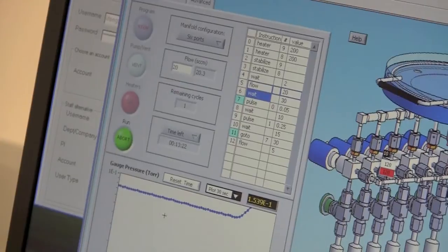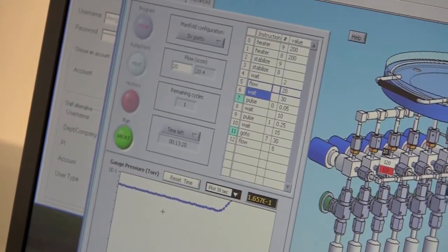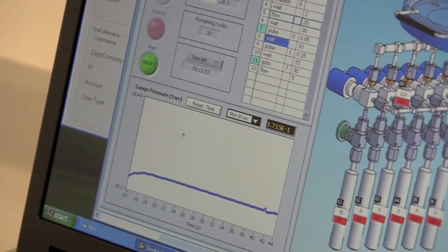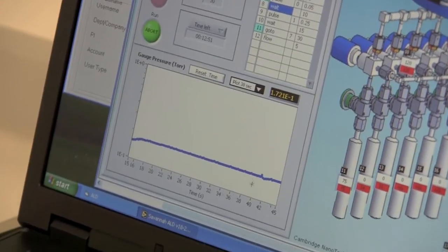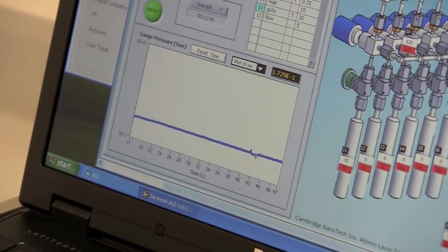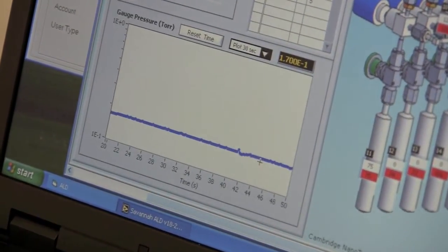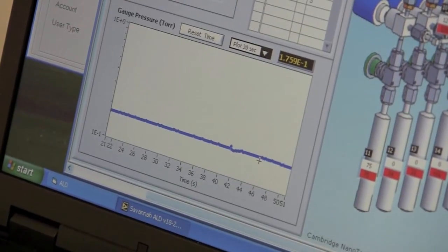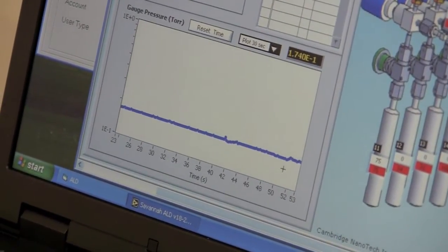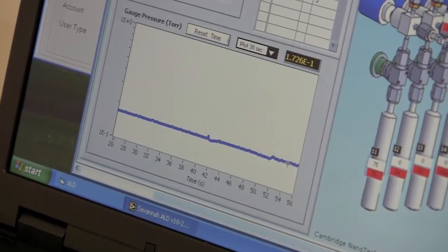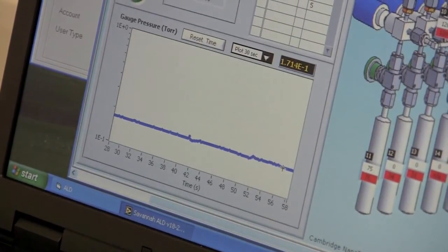Now the system is stabilizing. The stabilization is over. And you see the first pulse comes in. That means the precursor is pulse injected into the chamber. Now here's the second pulse comes in. That means the water vapor is pulse injected into the chamber.